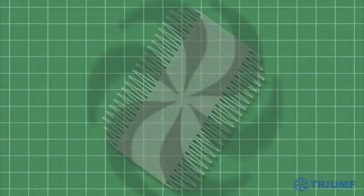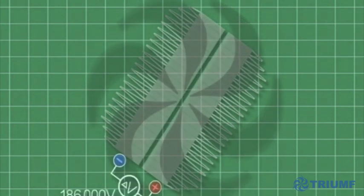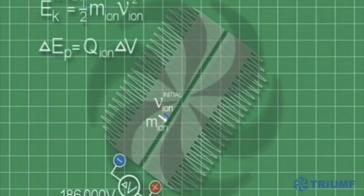To do this, the cyclotron is separated into two D-shaped sections, a gap with a 186,000 volt potential difference runs down the middle of these Ds along the cyclotron's diameter. As the ion bunch crosses this gap, it is accelerated by an electric field.